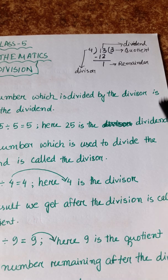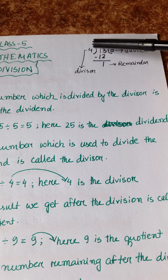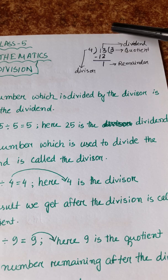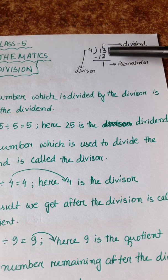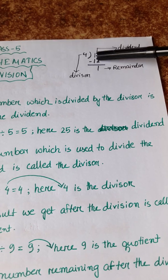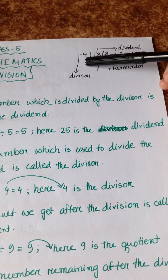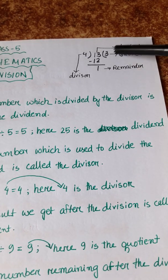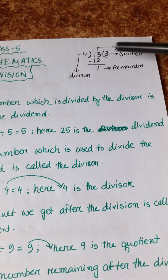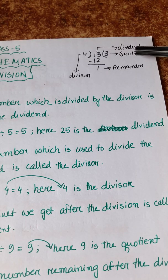The first division example: 13 divided by 4 is equal to 3 and the remainder is 1. So here we have 13 as the dividend, 4 as the divisor, 3 as the quotient, and 1 as the remainder. This is the division.